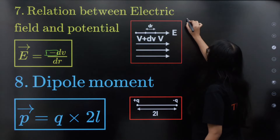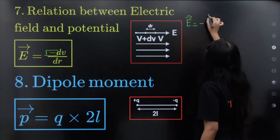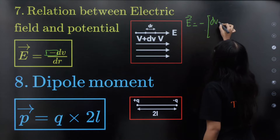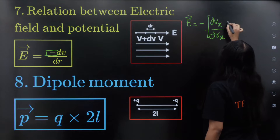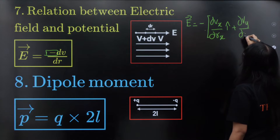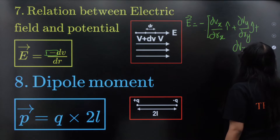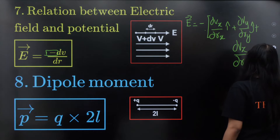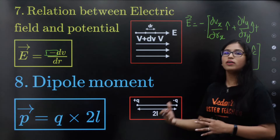Electric field in terms of potential: E equals minus (∂V/∂x î + ∂V/∂y ĵ + ∂V/∂z k̂). These are the formulas for all coordinates.